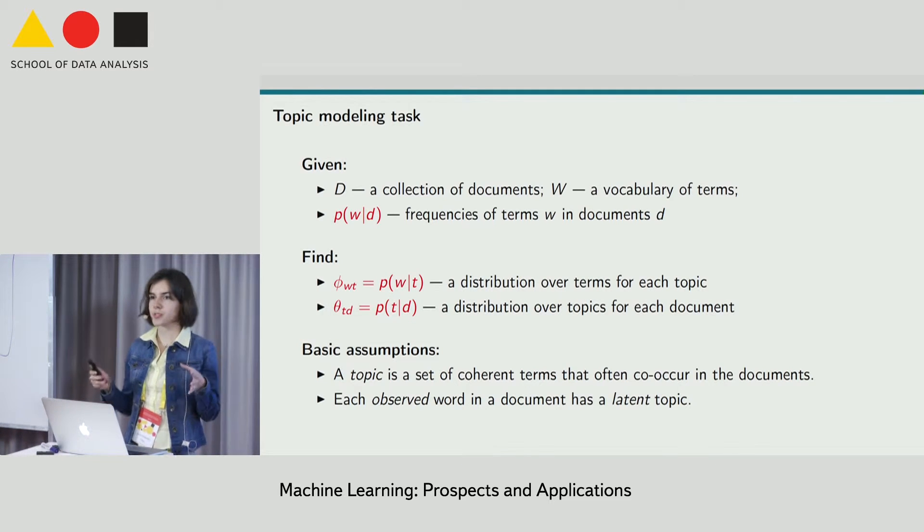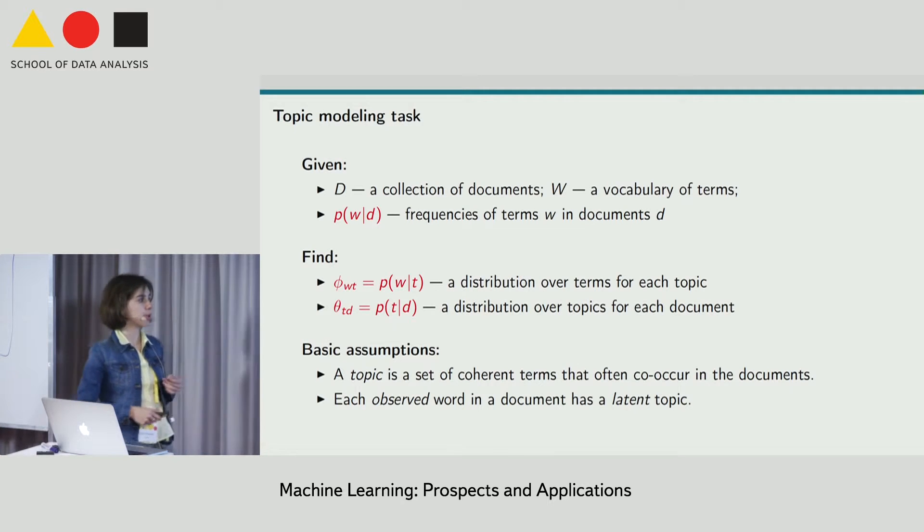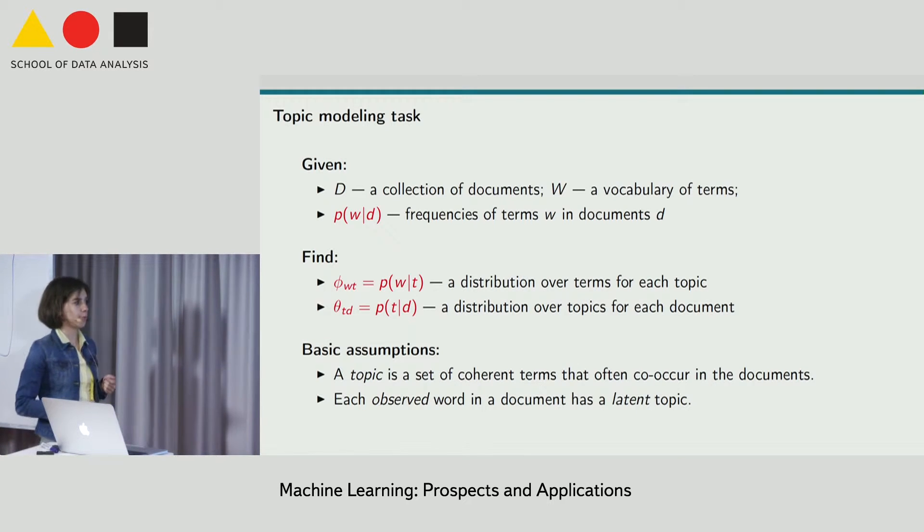Basically, it performs soft bi-clustering of words and documents into topics. This results in two kinds of distributions: phi for words and topics, and theta for topics and documents.